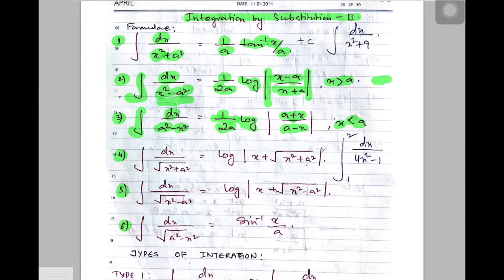If you look at the upper formula and the lower formula, they are quite different. Remember, the formula is different when x squared is towards the left versus when a squared is towards the left. So when you write x squared minus a squared, it's a different formula; when you write a squared minus x squared, there is a different formula.